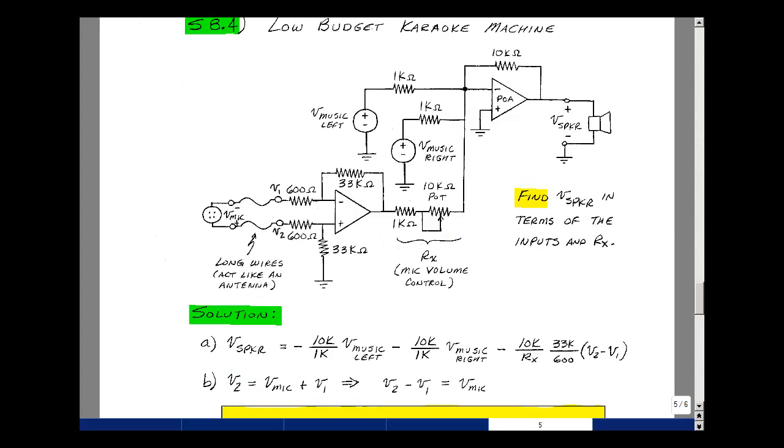From supplemental problem 8.1, the voltage at the output is going to be equal to minus 10k over 1k times this input which would be the left channel of some music source, and then minus the ratio of 10k to 1k times this input which is the music from the right channel.